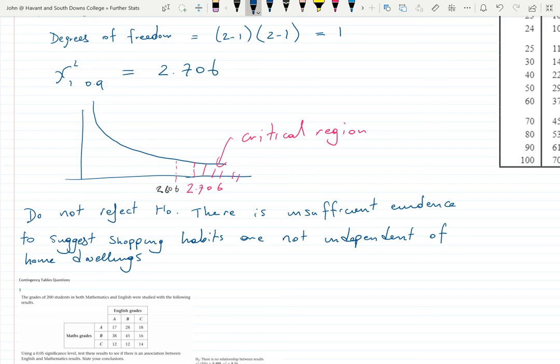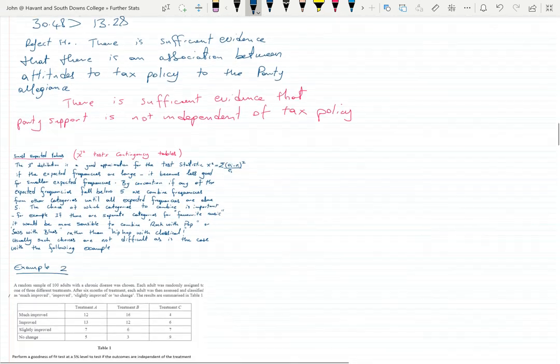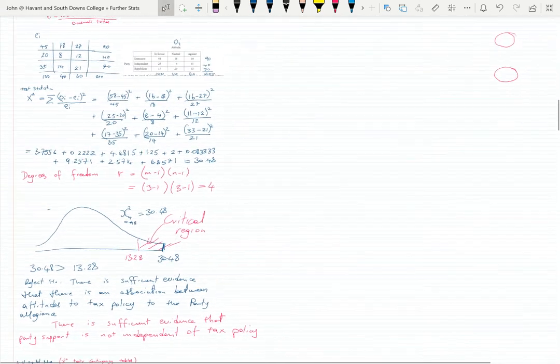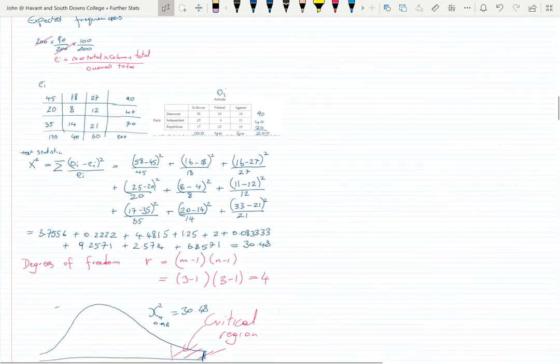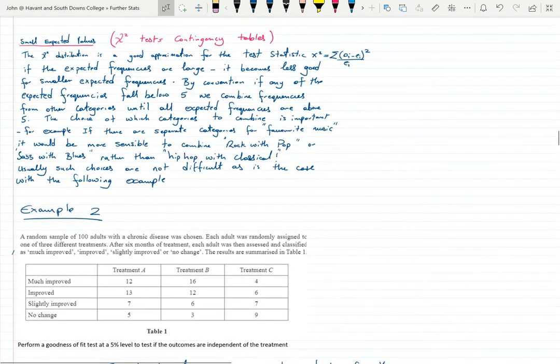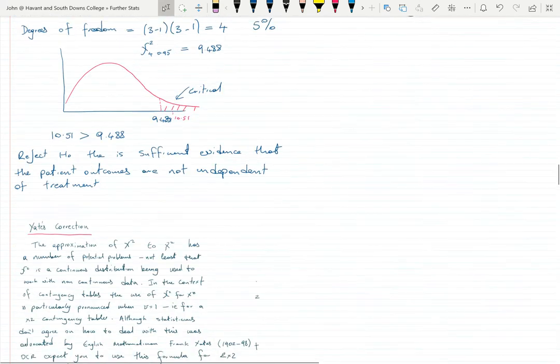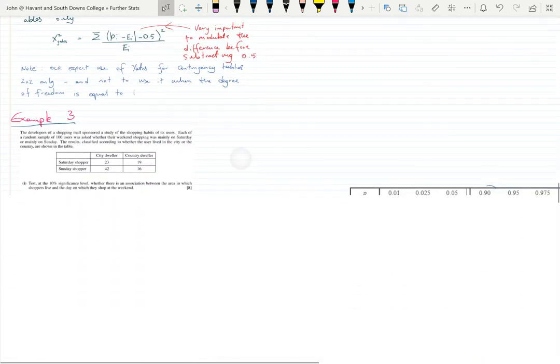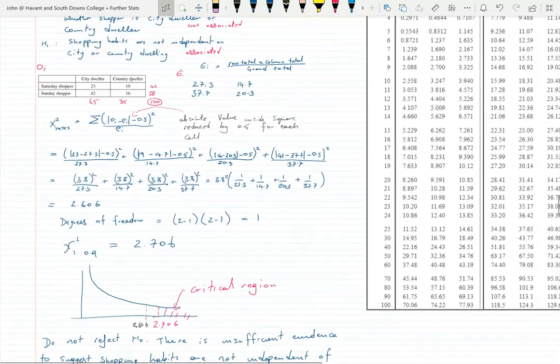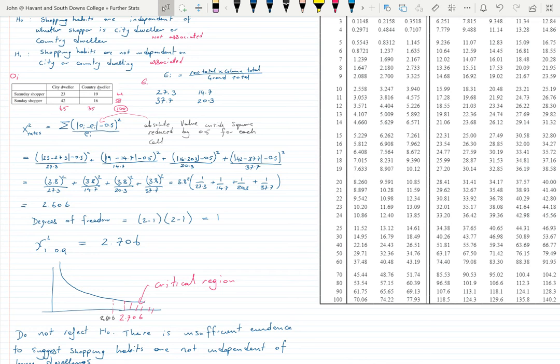That hopefully covers in these three examples what I wanted to cover. The first example was just one where there was no combination of cells, just straight calculations with no combining of categories. Second example we were combining categories because the expected values were below five. And on the third example was a Yates example because we have a two by two table which we use this Yates adjustment to allow for that. Okay, hopefully this has been useful to you.